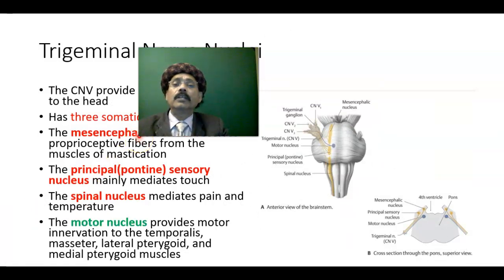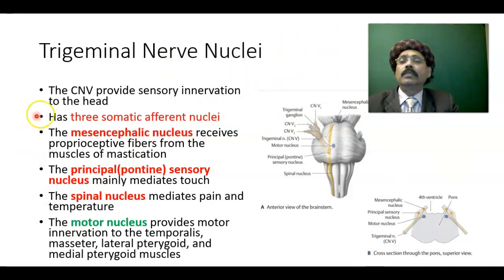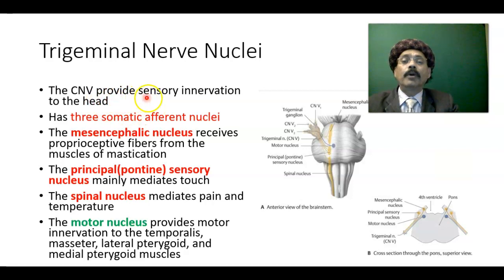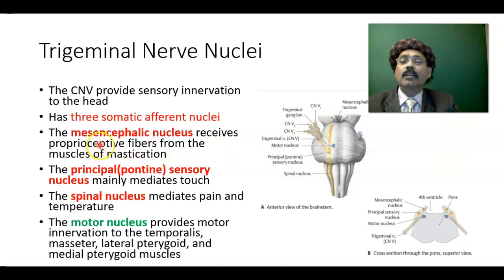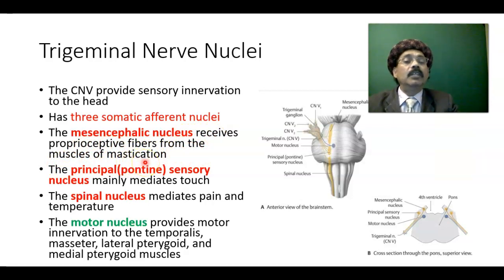The trigeminal nerve has nuclei and provides sensory innervation to the head. There are three somatic afferent nuclei. The mesencephalic nucleus is present in the upper part of the pons extending to the lower part of the midbrain. It receives proprioceptive fibers from the muscles of mastication — proprioception meaning position and movement sense.